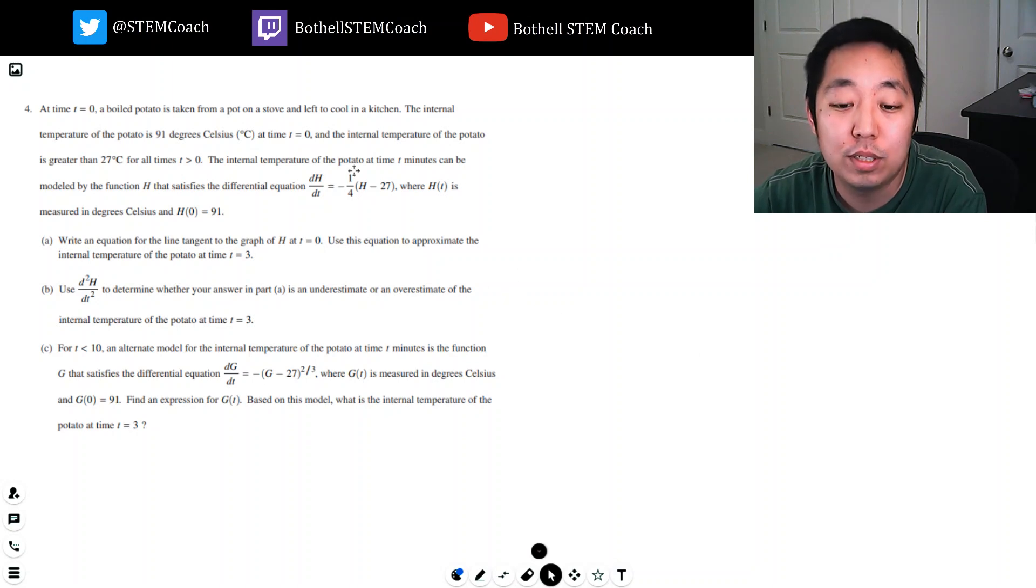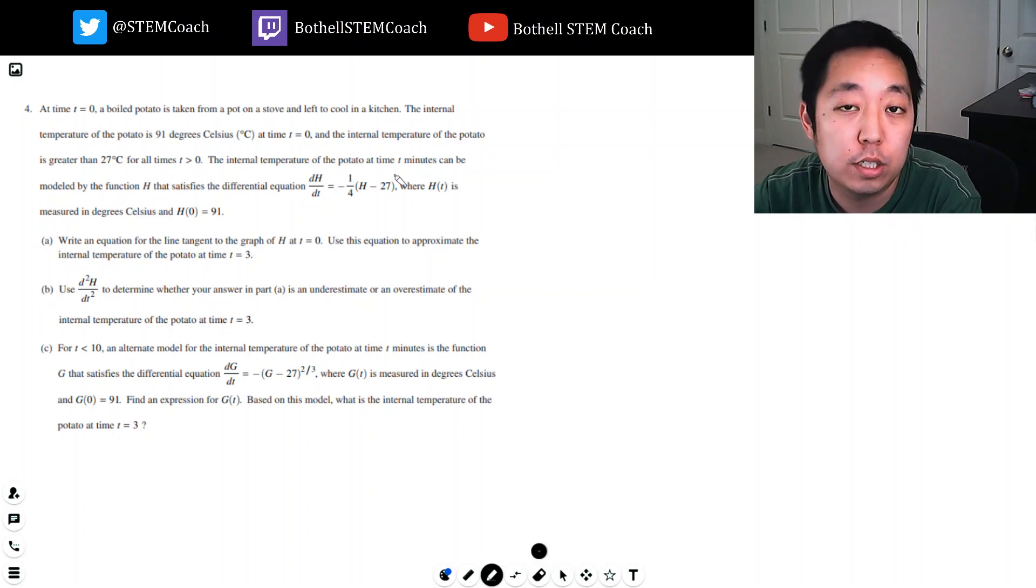Hey guys, this is Alan with Bothell STEM Coach and today we are continuing on the AP Calculus 2017 free response questions. We're looking at number four now, which is the non-calculator portion. At time t equals zero, a boiled potato is taken from the pot on a stove and left to cool in a kitchen.